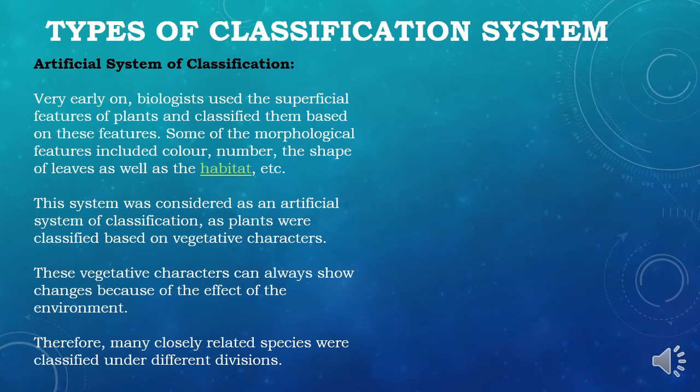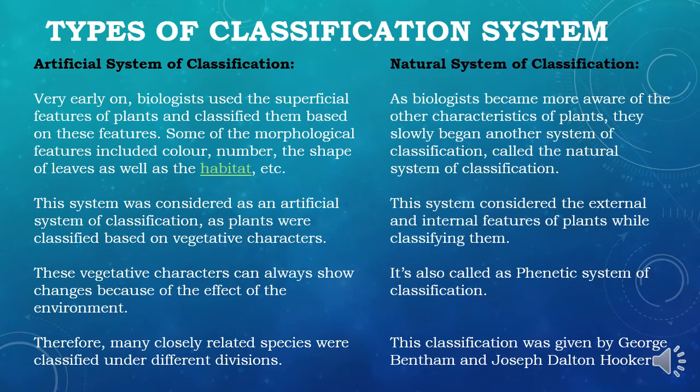This system of classification has its own drawback. Coming to the natural system of classification — as biologists became more aware of other characteristics of plants, they began another system called the natural system of classification. This system considered both external and internal features of plants while classifying them, unlike the artificial system which dealt only with external features. It is also called the phenetic system of classification, given by George Bentham and Joseph Dalton Hooker.